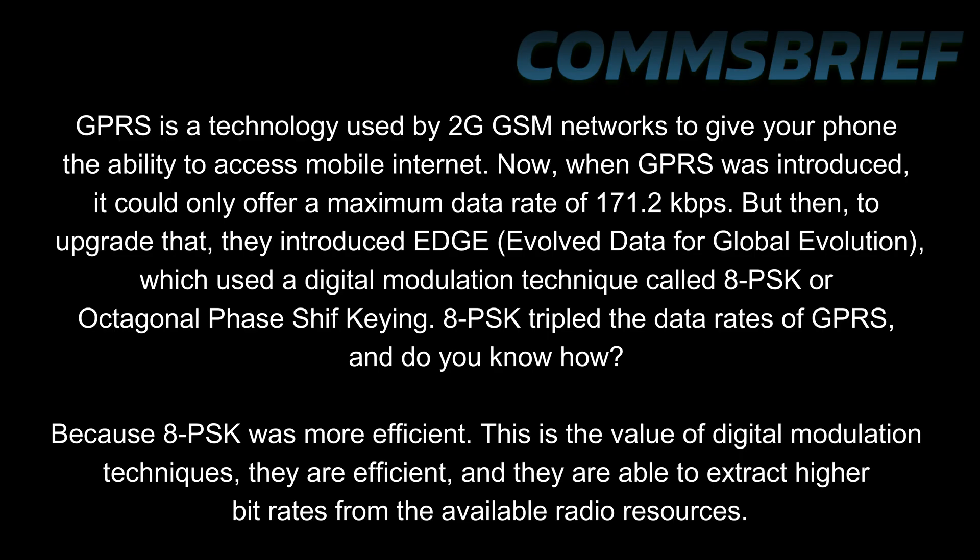To understand the beauty of digital modulation, consider GPRS — the technology used by 2G GSM networks to give your phone mobile internet access. When GPRS was introduced, it could only offer a maximum data rate of 171.2 kbps, which is quite low. To upgrade that, they introduced EDGE — Evolved Data for Global Evolution — which used a digital modulation technique called 8PSK, or Octagonal Phase Shift Keying. 8PSK tripled the data rates of GPRS because it was more efficient. This is the value of digital modulation: it extracts much higher bit rates from available radio network resources.